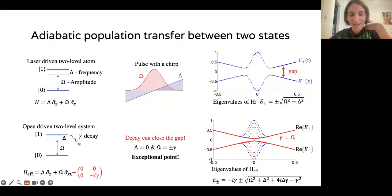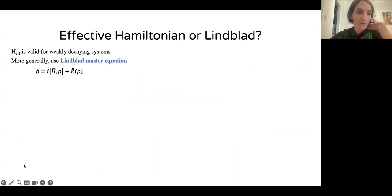And this is an exceptional point. Why exceptional? Because this 2×2 matrix has a single eigenvalue, but also a single eigenvector. It means that we don't have a complete basis of eigenvectors to span the Hilbert space. Perturbation theory breaks down. This is interesting mathematically. But that's not even the end of the story, because it's not always valid to use an effective Hamiltonian for open systems. Effective Hamiltonians are valid for weakly decaying systems, but a more general treatment is the Lindblad master equation.